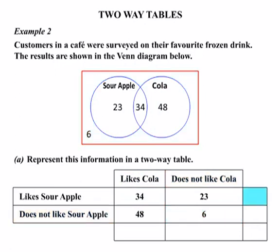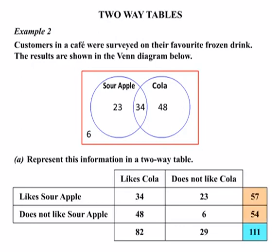Now we calculate the totals. Adding 34 and 23 across the Sour Apple row gives 57. Adding 48 and 6 gives 54 for the 'not Sour Apple' row. Down the Cola column, 34 plus 48 gives 82 customers. For the 'not Cola' column, 23 plus 6 gives 29. For the grand total we can add 57 and 54 to get 111, and double-check by adding 82 and 29, which also gives 111.